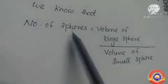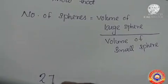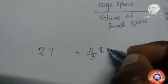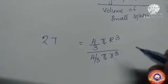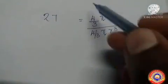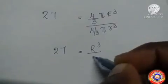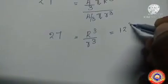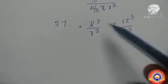We know that the number of spheres is equal to the volume of the large sphere divided by the volume of the small sphere. Given that the number of spheres is equal to 27, we can write: 27 is equal to (4/3)πR³ divided by (4/3)πr³, where capital R is the radius of the large sphere and small r is the radius of the small sphere. We can cancel 4/3π on both sides. Then we get 27 equal to R³ divided by r³, which is equal to 12³ divided by r³.